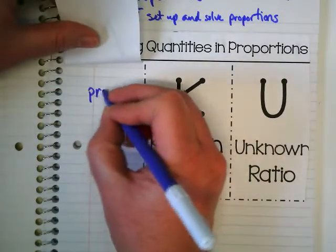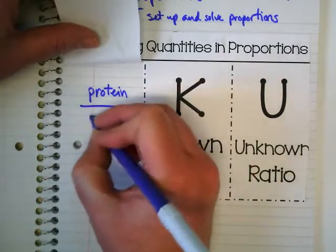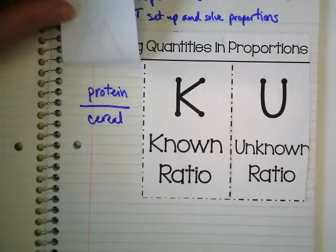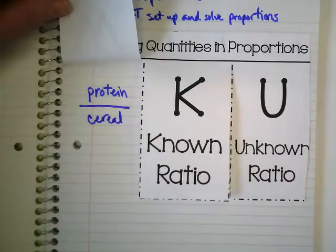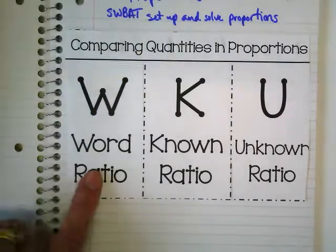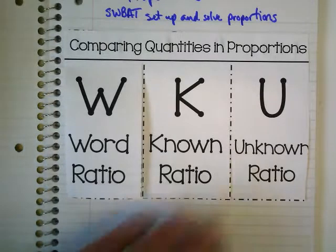And we were comparing protein to cereal. The word part of our flip book here is really telling us, it's like a map of how we're going to set up our proportion.